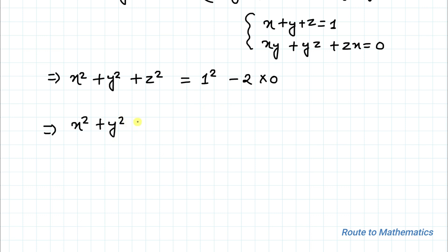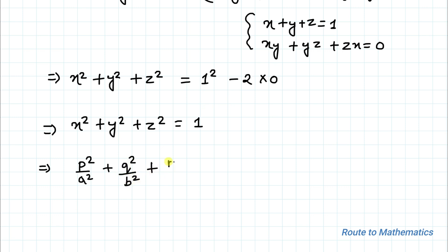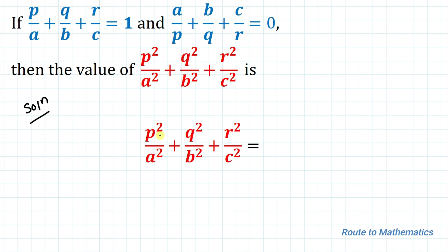Since we defined x, y, z as p/a, q/b, and r/c respectively, putting the values back we have p²/a² + q²/b² + r²/c² = 1. So our answer is 1. I hope you have understood the solution. Thanks for watching — please subscribe to my channel and hit the like button for more such interesting videos!